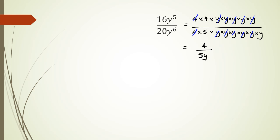Now have a look at how else could I do this. The other way I would do this is if I have 16y to the power of 5 and 20y to the power of 6, what I tend to do is I know that 4 is a common factor, which means I divide both numbers by 4 and I end up with 4 here, 20 divided by 4 is 5. Which means I'm left over with 4y to the power of 5 and 5y to the power of 6.